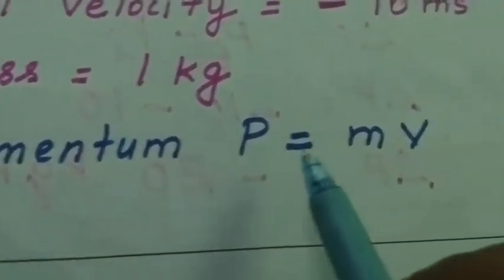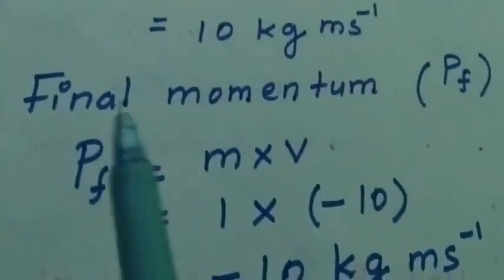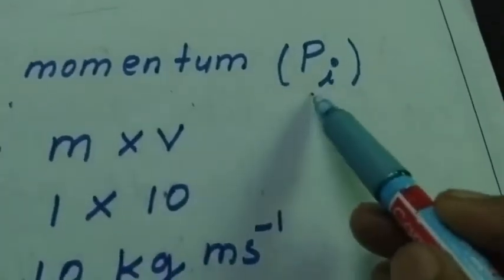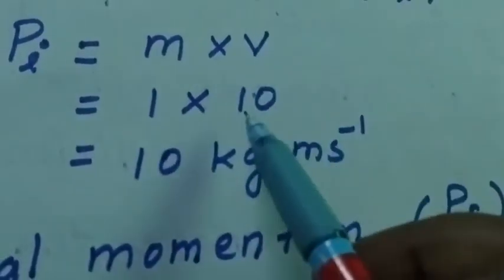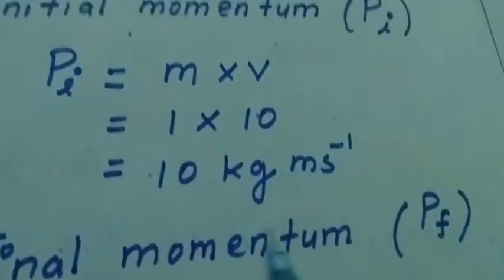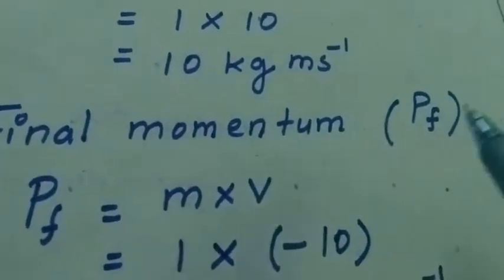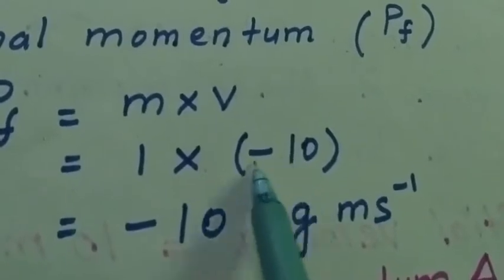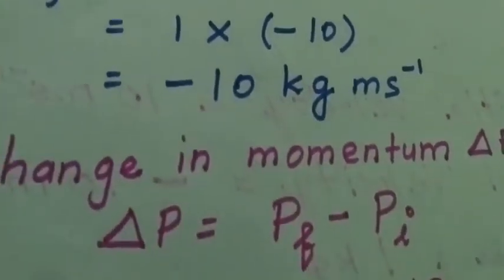We know that formula for momentum: p equal to m into v, so momentum equals mass into velocity. First we find initial momentum, then final momentum, then change in momentum delta p. Initial momentum pi equal to m into v, so 1 kg into 10 meter per second, which gives 10 kg meter per second. Final momentum pf equal to m into v equal to 1 into minus 10, which gives minus 10 kg meter per second.